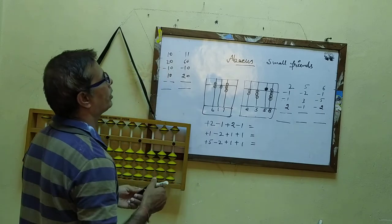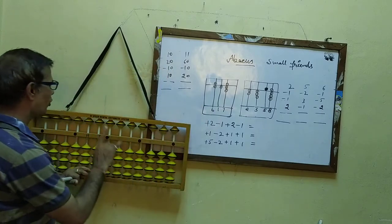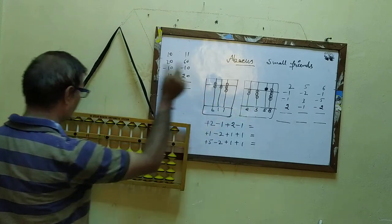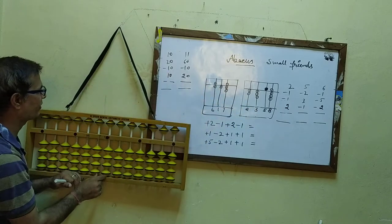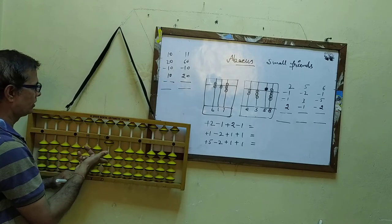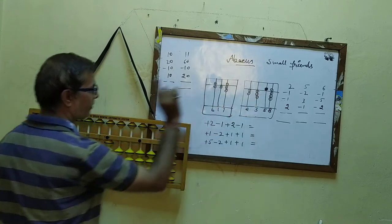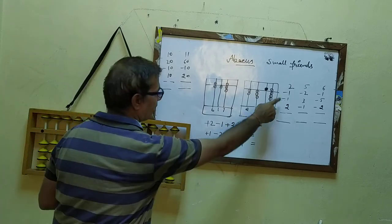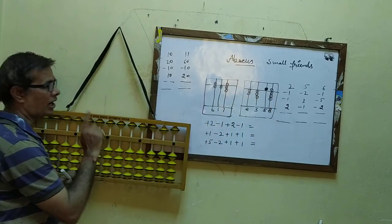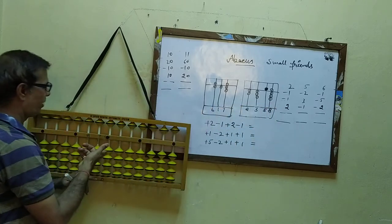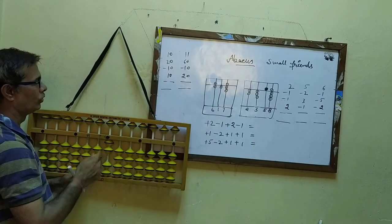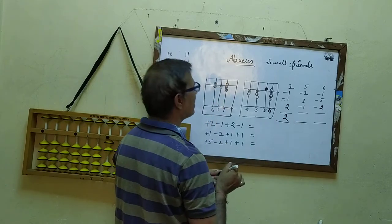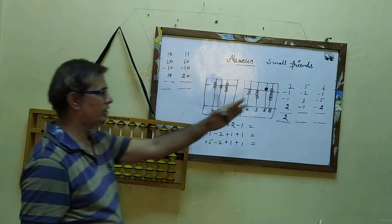First, take plus two. You will use the ones place here. Plus two, plus two — one, two. Then minus one — minus means down, so minus one down. Then plus two again — one, two. So the answer is two.